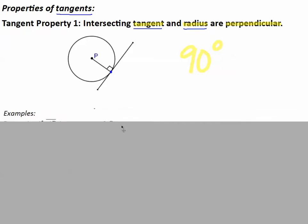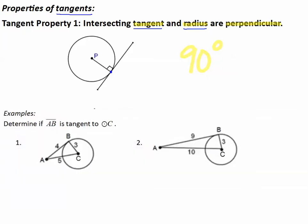Let's look at some examples that apply this. First, determine if segment AB is tangent to circle C. If this segment is tangent to this circle, then this must be a right angle — the question is: is this 90 degrees? Well, if this is a right angle, this is going to be a right triangle. How do we determine if this triangle will have a right angle? Pythagorean theorem.